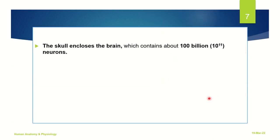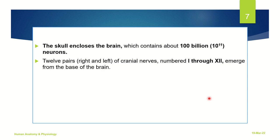The brain, which is a component of the central nervous system, is enclosed within the skull and contains about 100 billion — or 10 raised to the power 11 — neurons. There are 12 pairs of cranial nerves communicating from the brain, both towards the right side and the left side of the body, numbered 1 through 12.